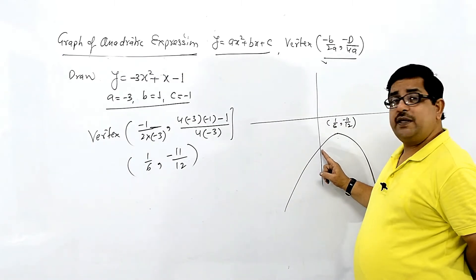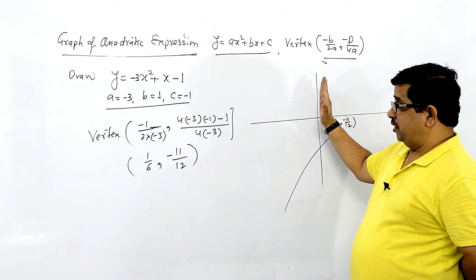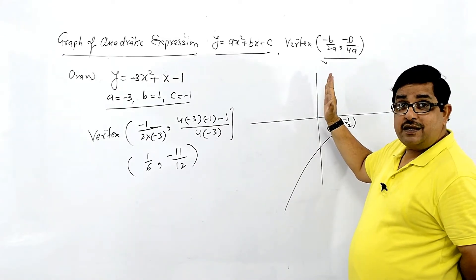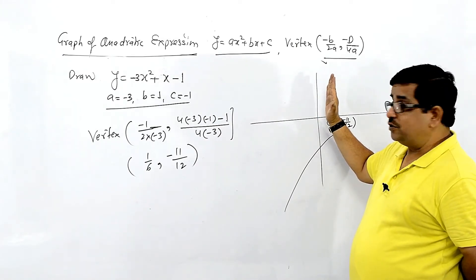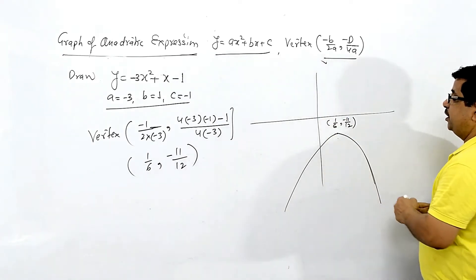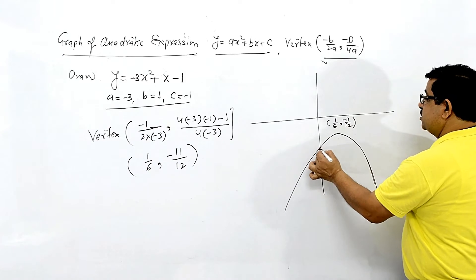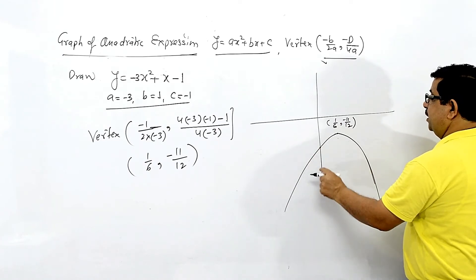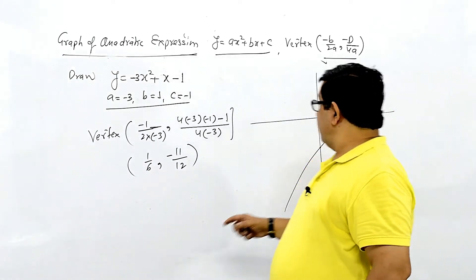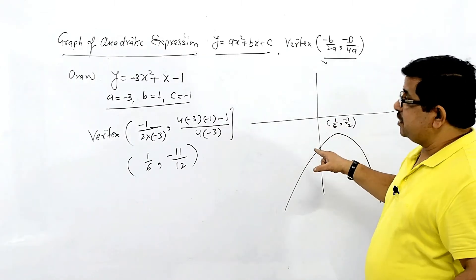We can also find where the graph cuts the y-axis: set x = 0 to find the y-intercept. If someone asks for more points on the graph, you can use x = 0 to find where it crosses the y-axis.